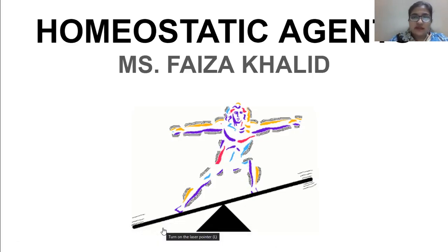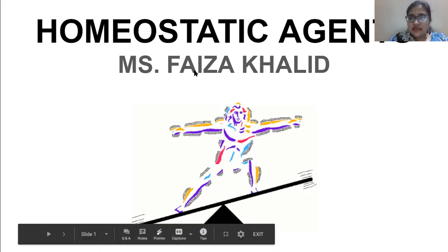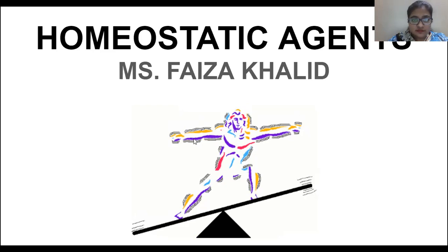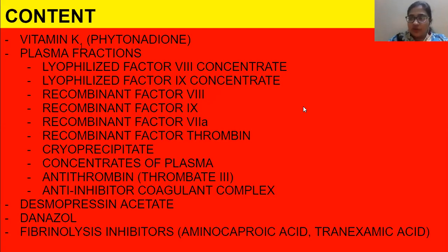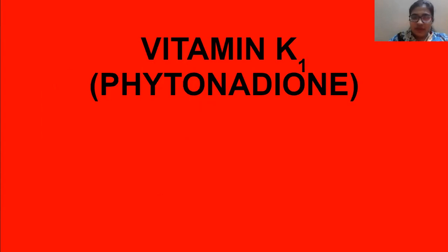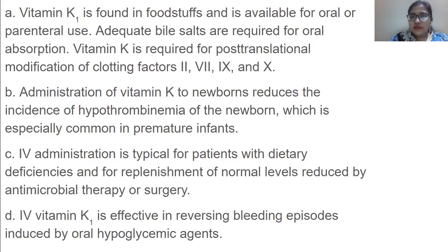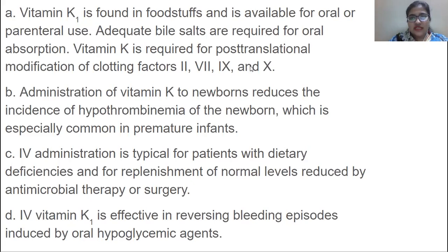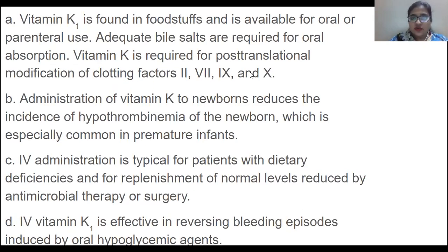Starting with vitamin K1, which is also called phytonadione. Vitamin K1 is found in foodstuff and is available for oral and parenteral use. Adequate bile salts are required for oral absorption. Vitamin K1 is required for post-translational modification of clotting factors 2, 7, 9, and 10.